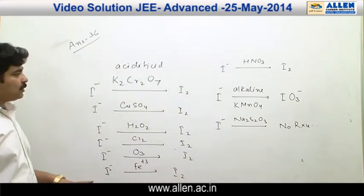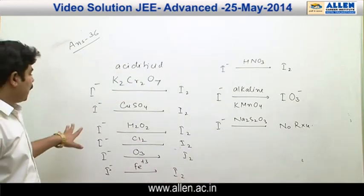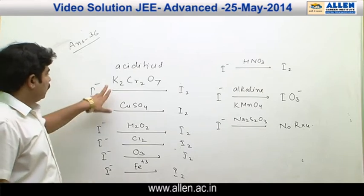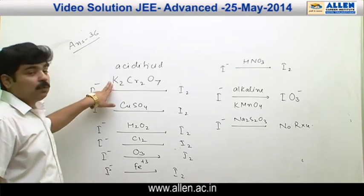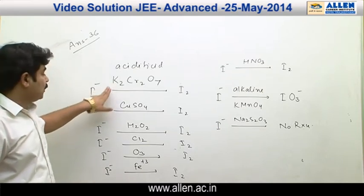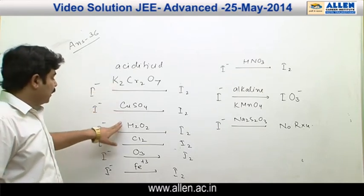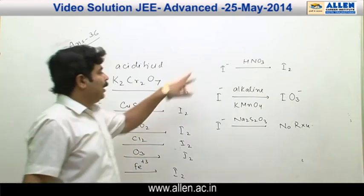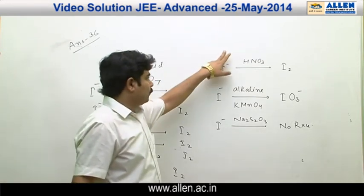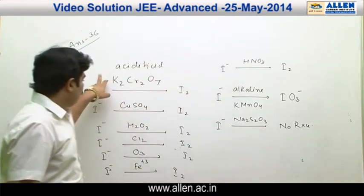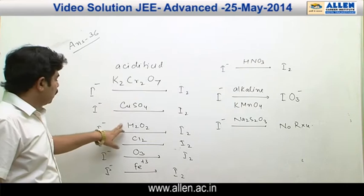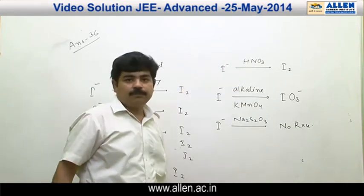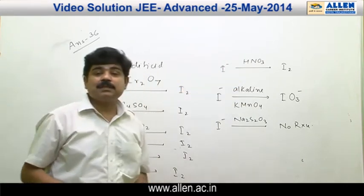The reagents which convert I⁻ into I₂ are: acidified K₂Cr₂O₇, copper sulphate, H₂O₂, Cl₂, ozone, Fe³⁺, and HNO₃. That gives us 1, 2, 3, 4, 5, 6, and 7. The answer is 7.